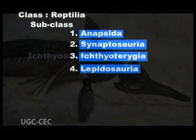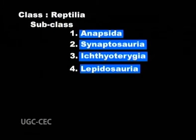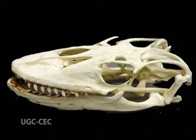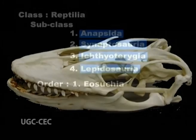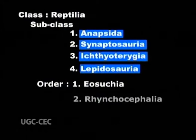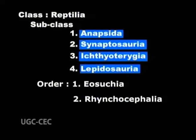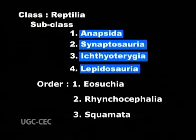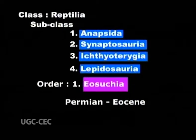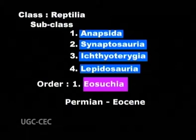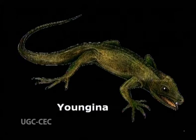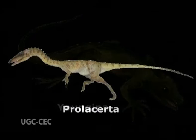Subclass 4, Lepidosauria — vertebrates that possess skulls with two major fenestrae. It comprises three orders: Eosuchia, Rhynchocephalia, and Squamata. Order 1, Eosuchia, existed during Permian to Eocene. Examples are Youngina and Prolacerta.